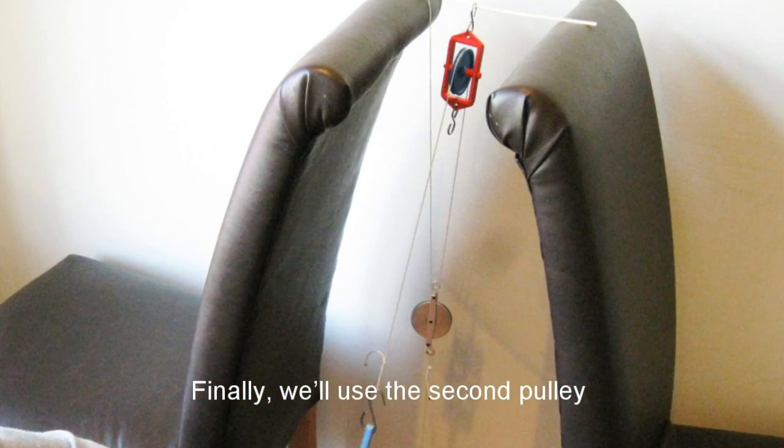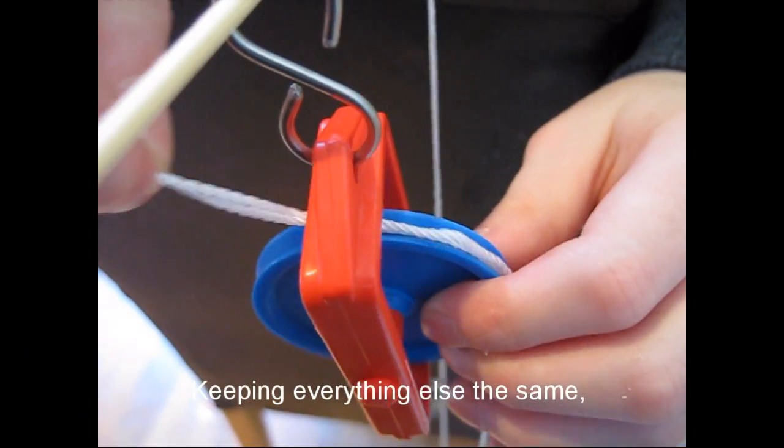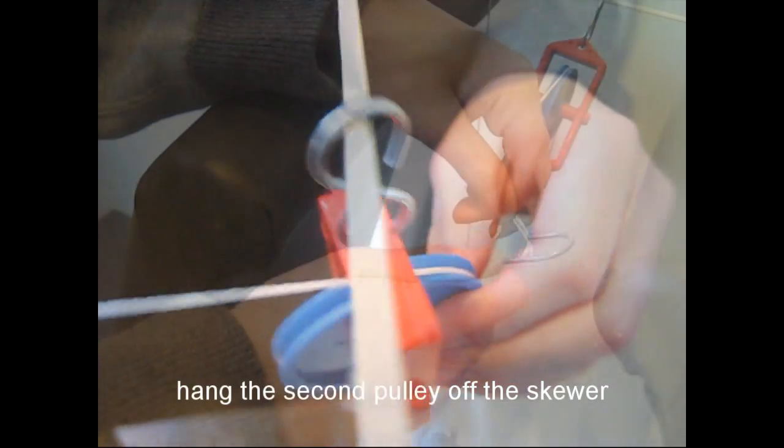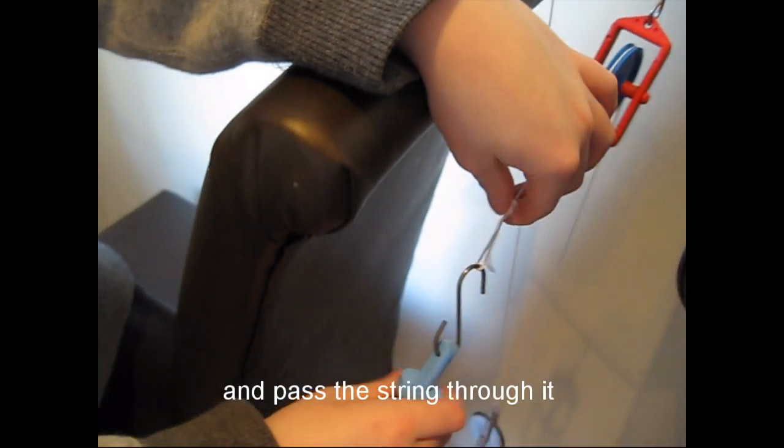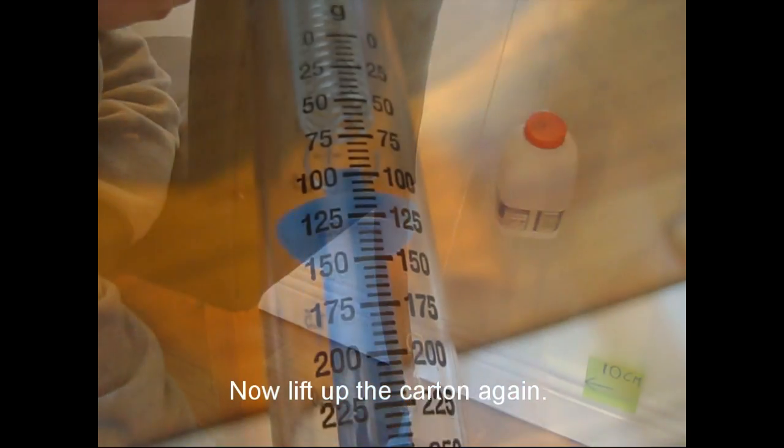Finally, we'll use the second pulley and see if it makes any difference to the force meter reading when we lift the carton. Keeping everything else the same, hang the second pulley off the skewer and pass the string through it before reattaching the force meter. Now lift up the carton again.